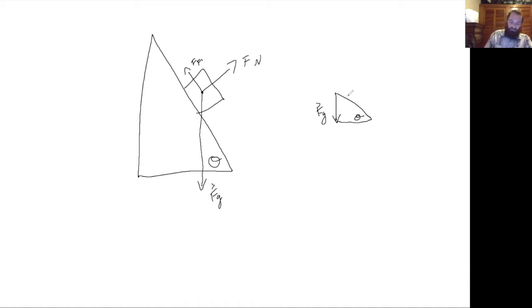So this triangle is only going to help us to define this angle phi as 90 degrees minus theta.